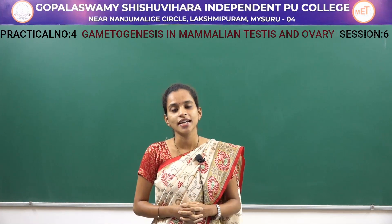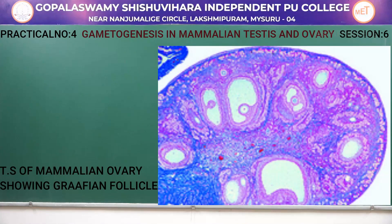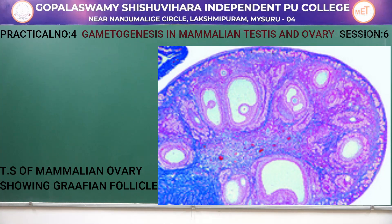Next we will study the transverse section of mammalian ovary. On the screen you can see the transverse section of mammalian ovary. The ovary is covered with a germinal epithelium. The cortex contains follicles which develop into different staged follicles, and finally — as you can see on the screen — a larger structure, the matured Graafian follicle.